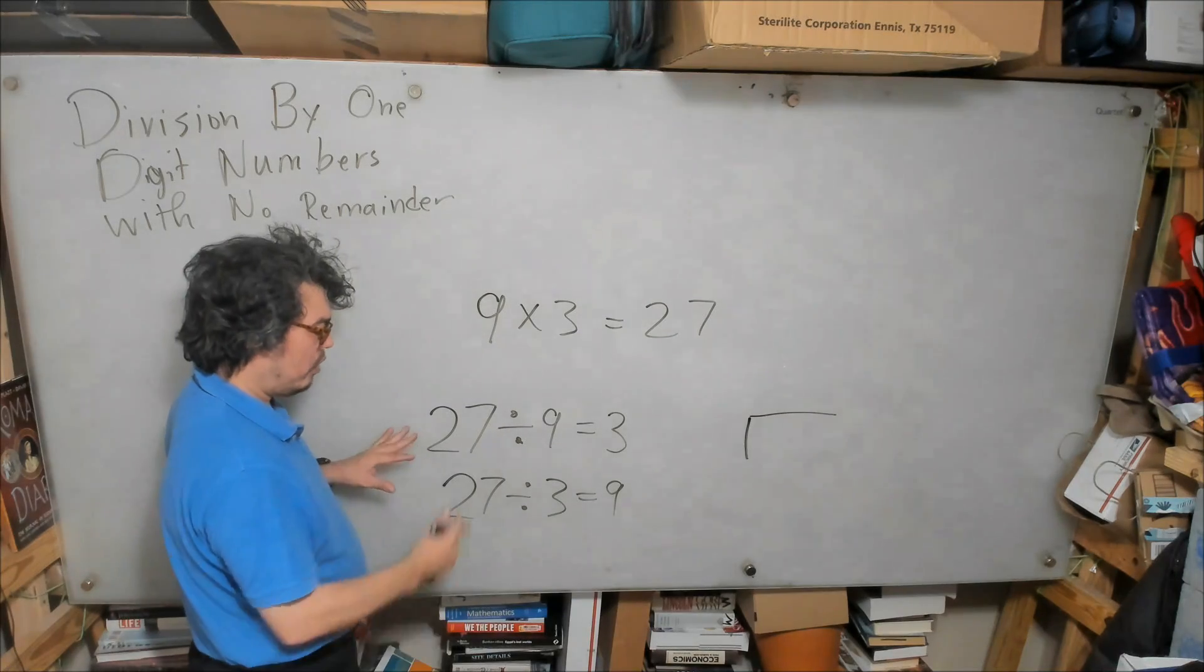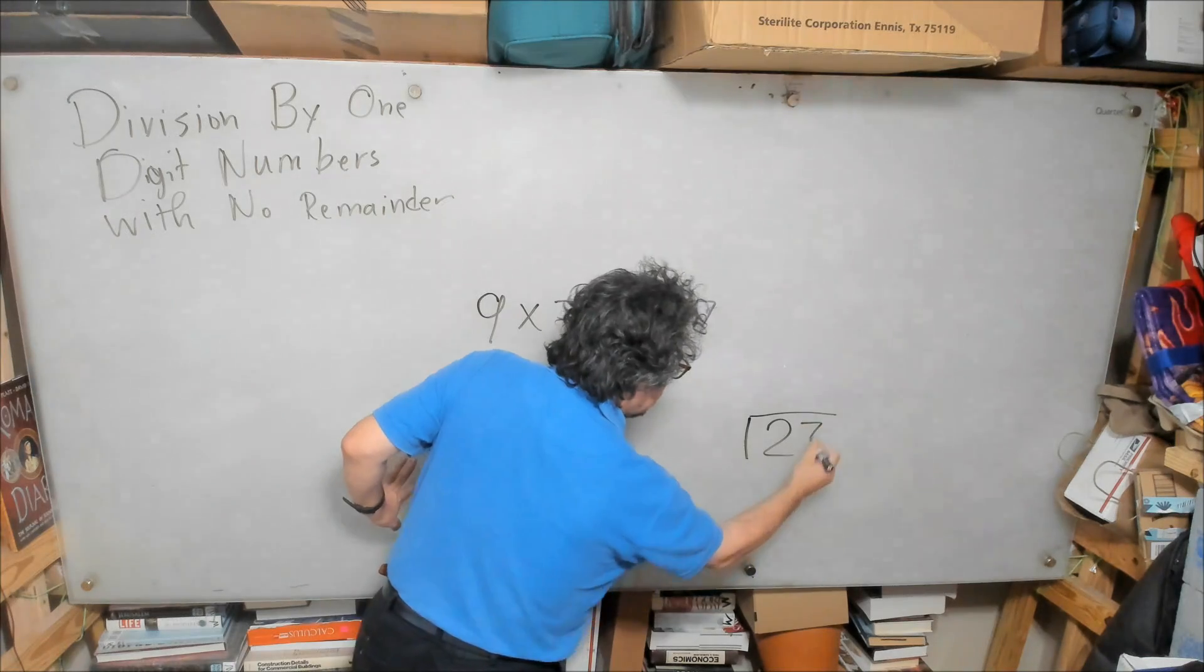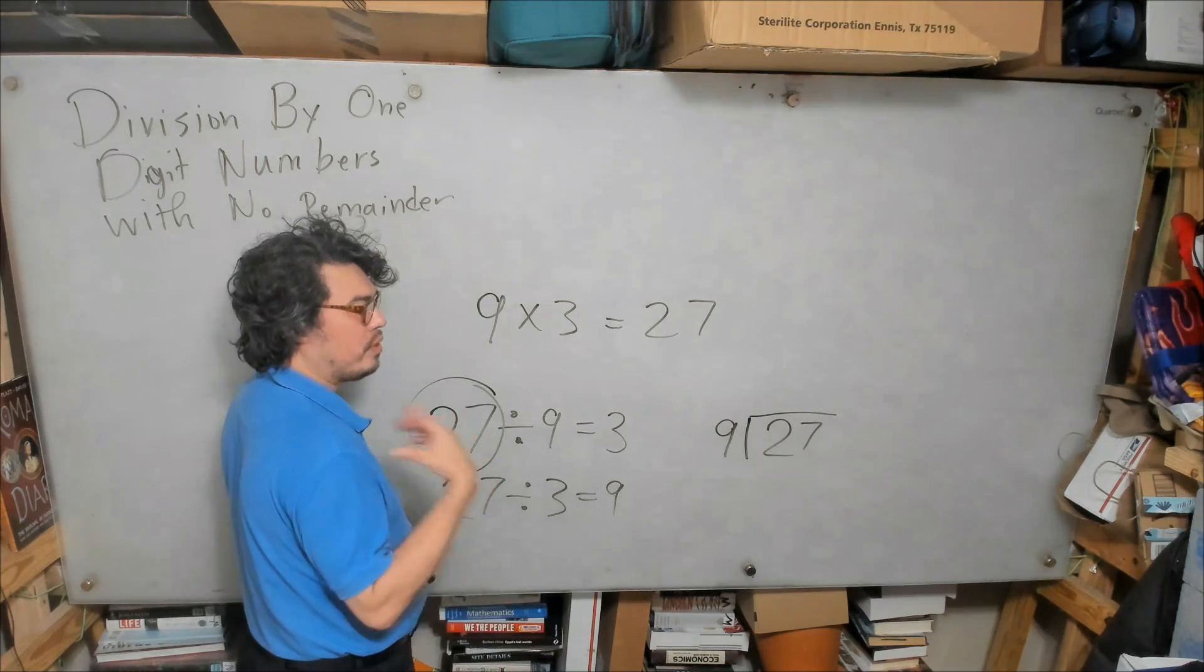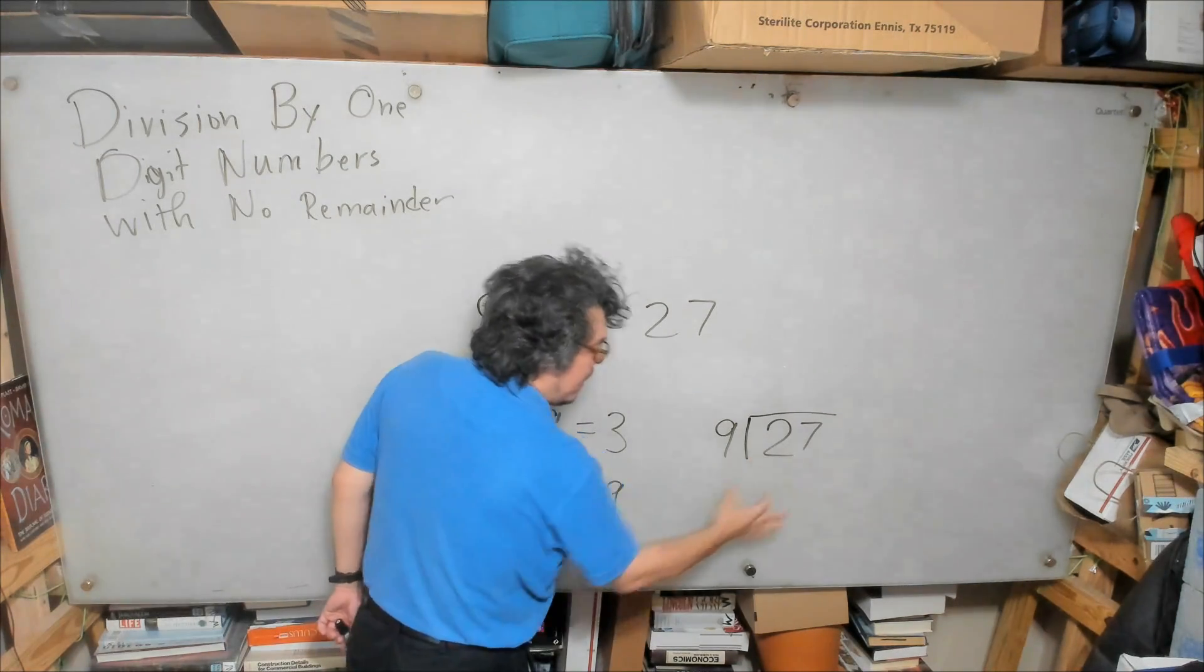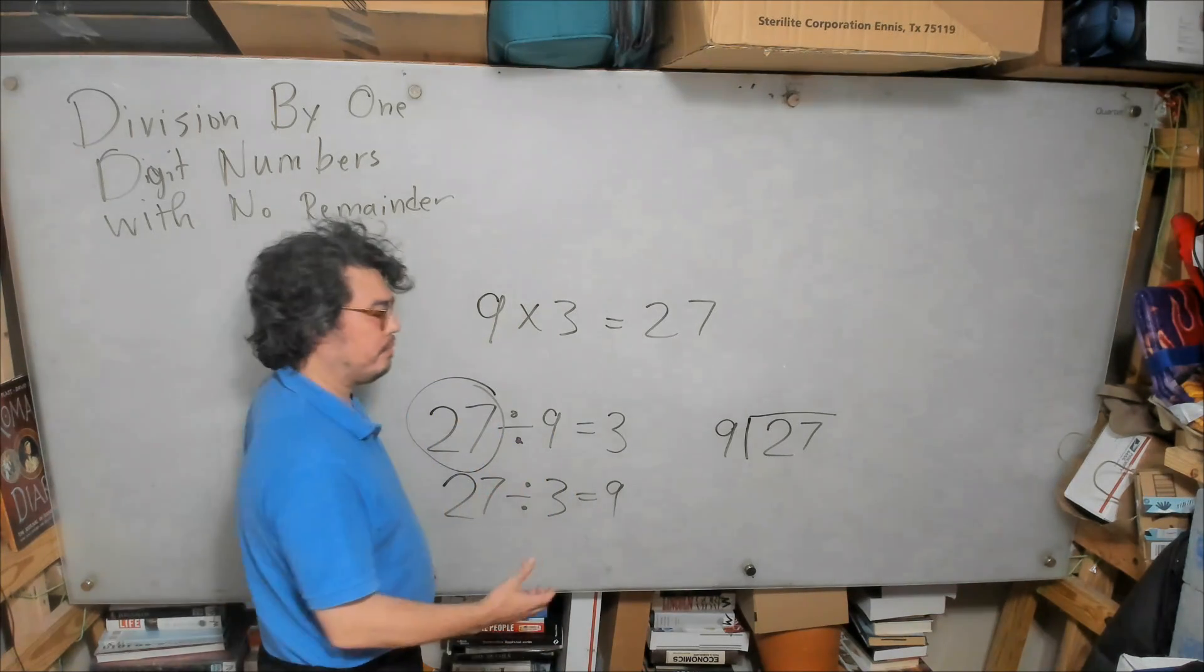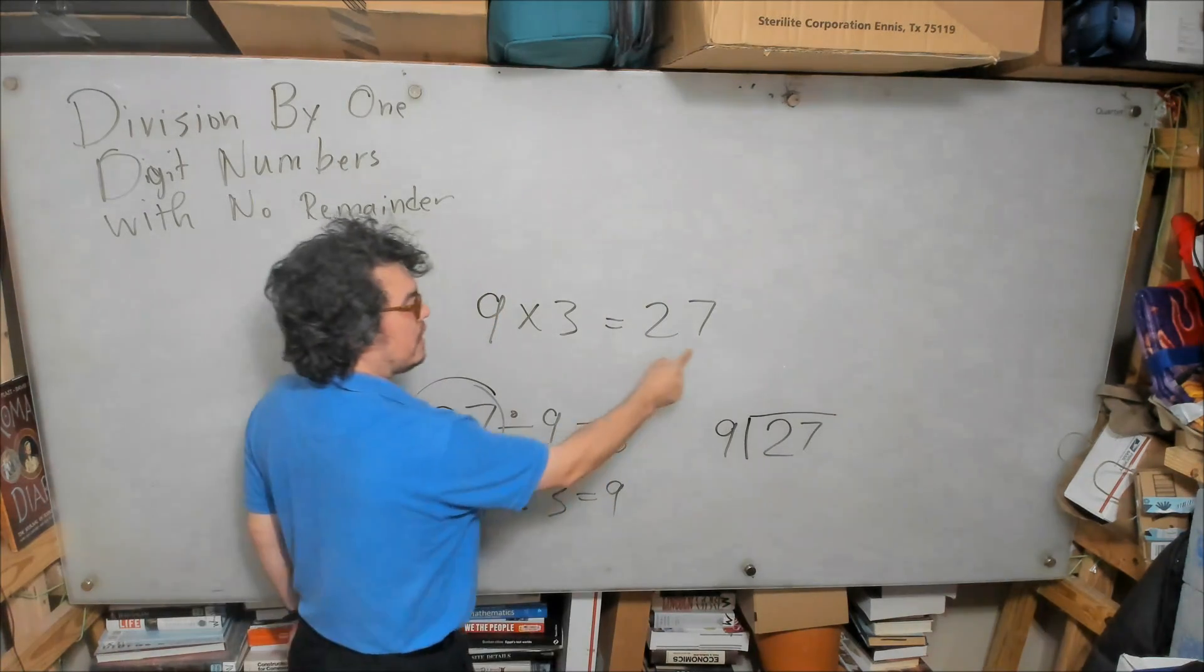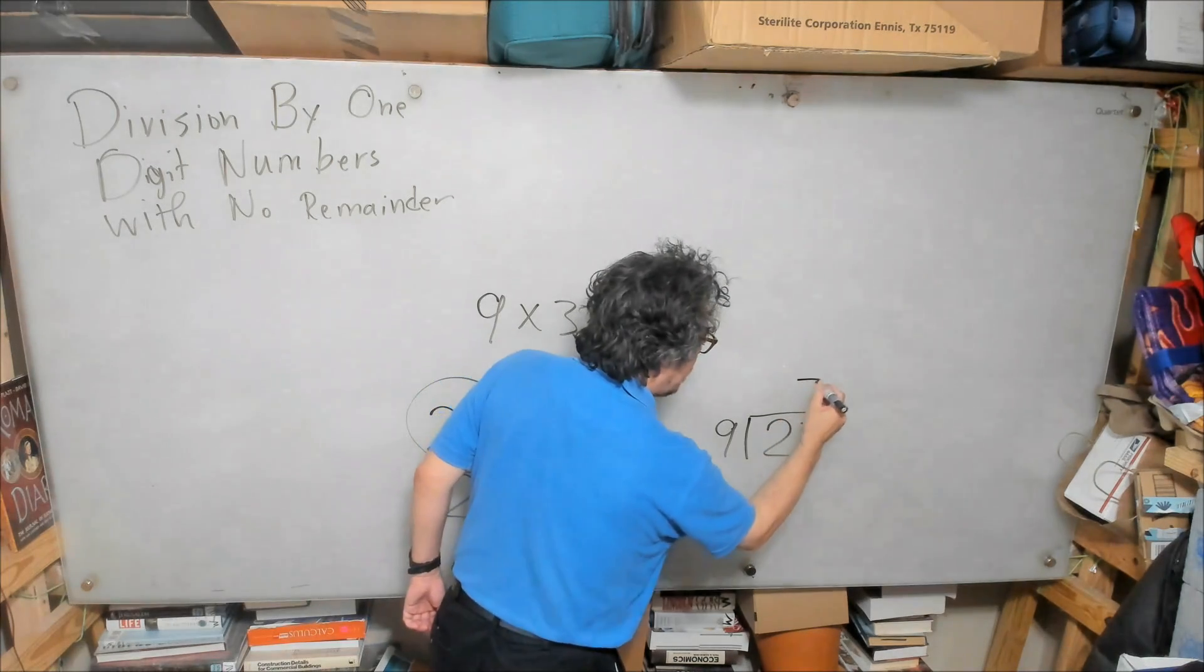For example, the number here, you're going to put inside the house. The number you're dividing by will go outside the house. So the way we're going to present this question is, can 9 go into 2? And it cannot, because 9 is too big. So the next question would become, can 9 go into 27? And because we know this multiplication fact, 9 times 3 equals 27, we would write 3 and place it there.